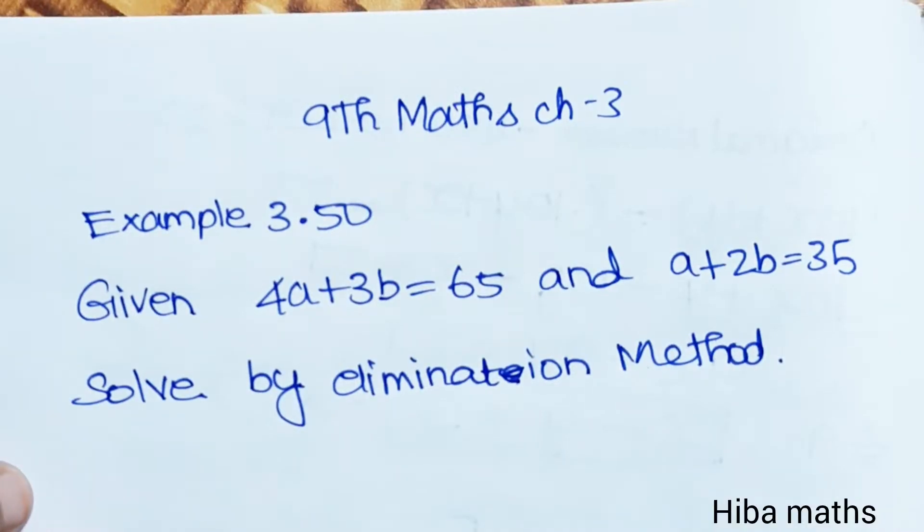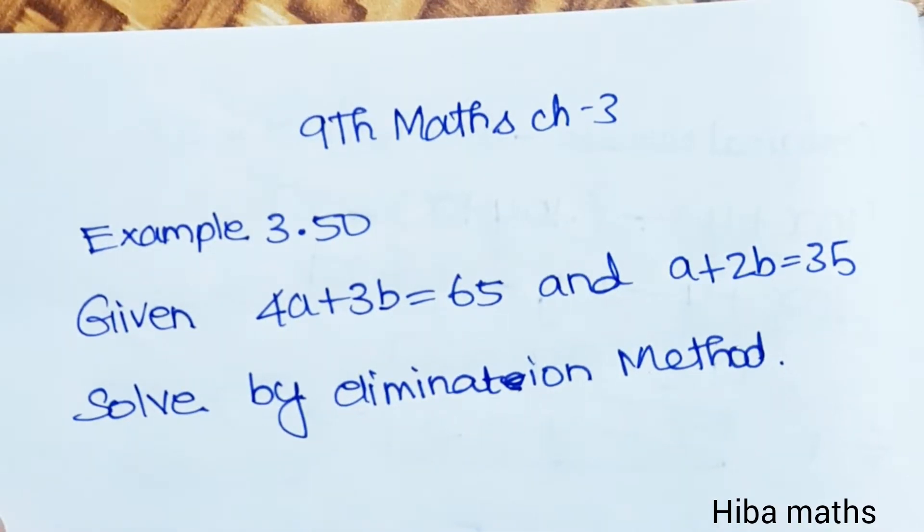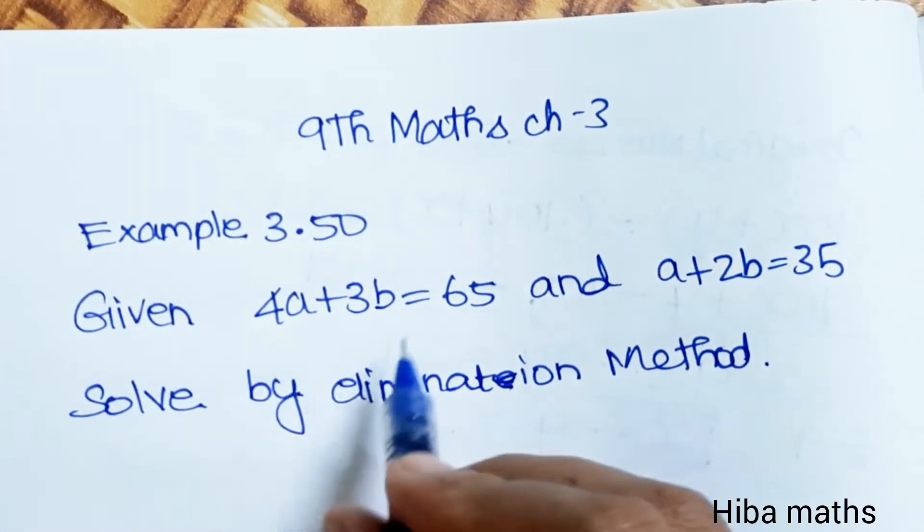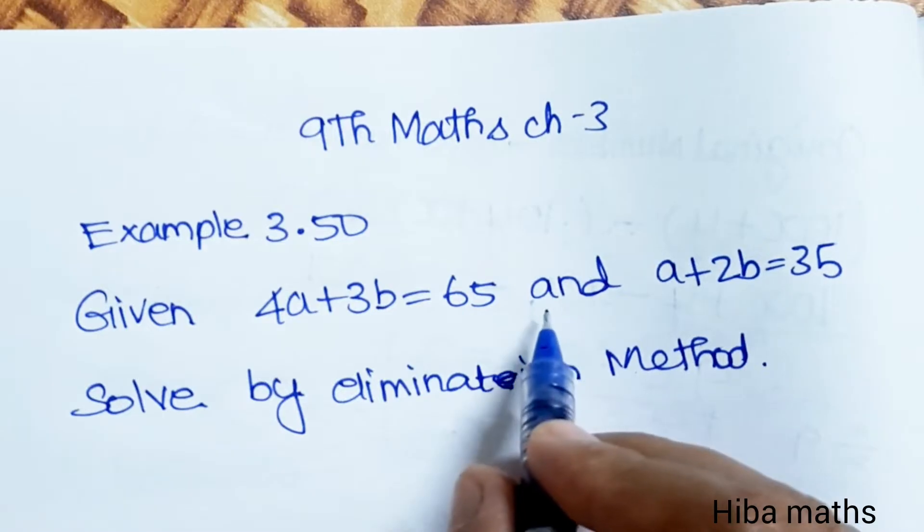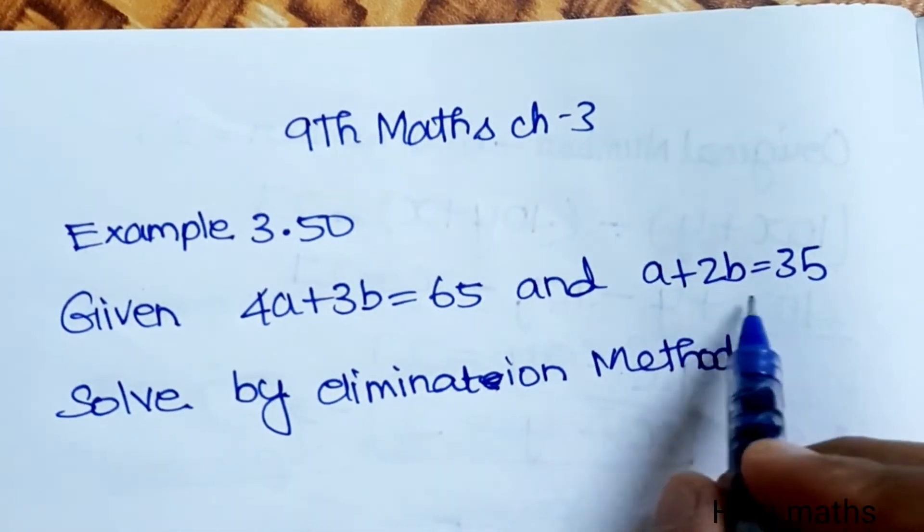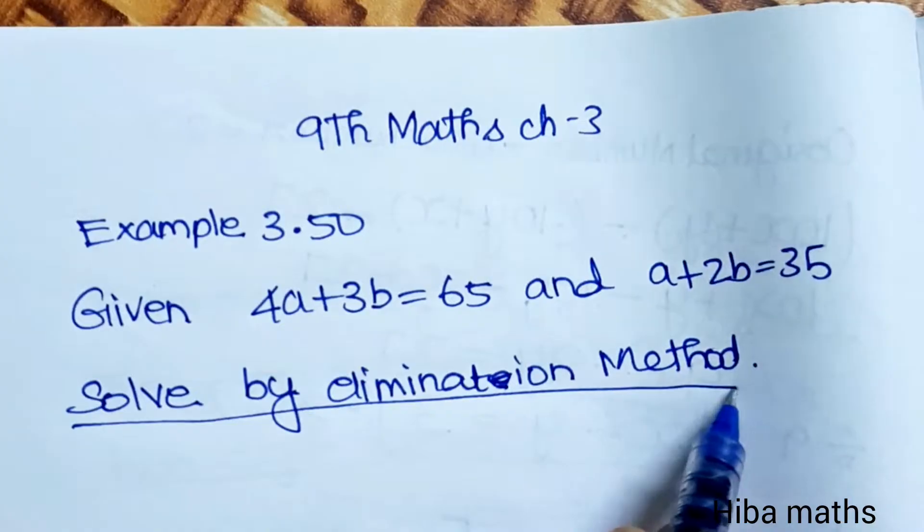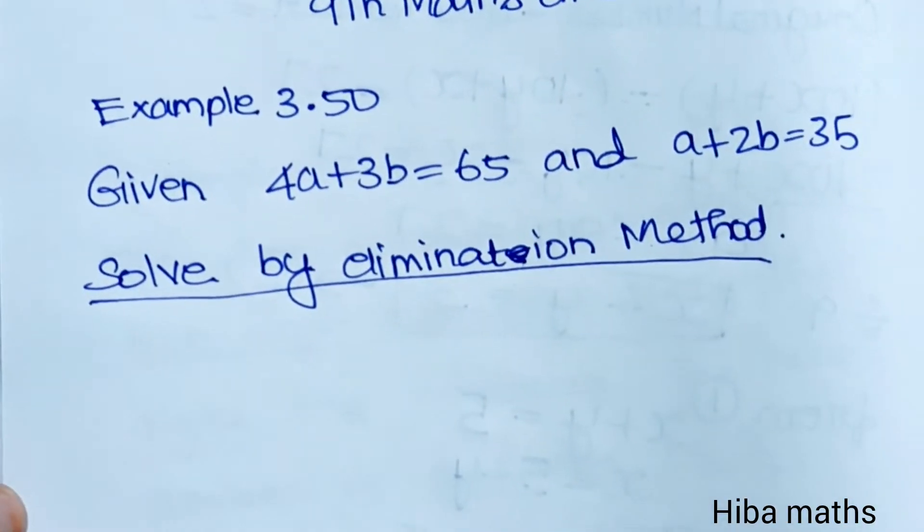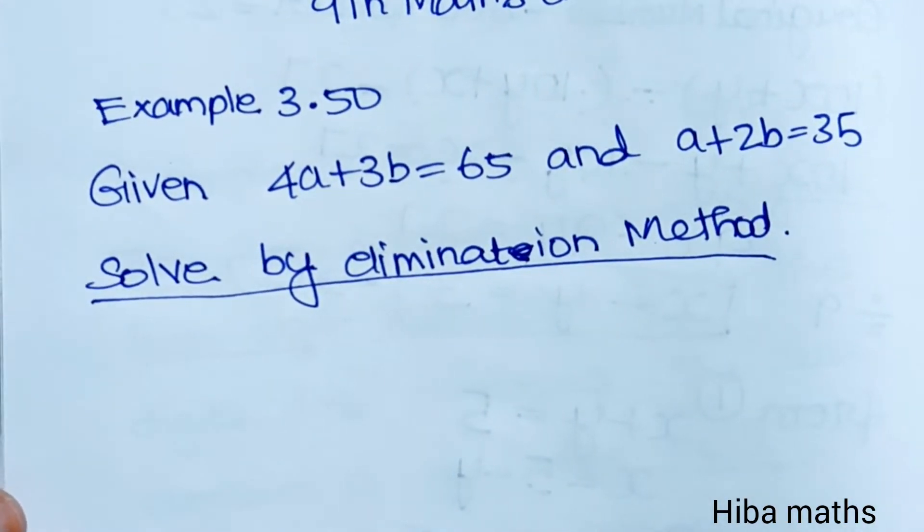Hello friends, welcome to Hiba Maths. 9th standard maths, chapter 3, example 3.50. Given 4a plus 3b equals 65 and a plus 2b equals 35, solve by elimination method. This substitution method is a little different, so I am going to tell you about elimination.